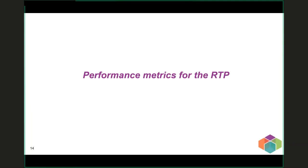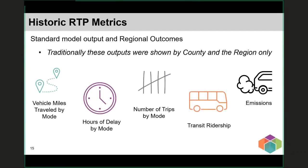We use our data and tools to develop metrics to evaluate the Regional Transportation Plan and address adopted policies. Looking at historic RTP metrics, things like vehicle miles traveled, delay, trips by mode, and emissions have been standard outputs for the RTP for many years. These measures are generally provided at the county and regional scale but by themselves don't paint a very complete picture of the outcomes of the regional plan.